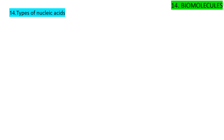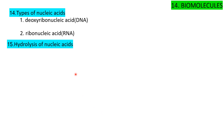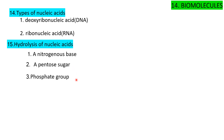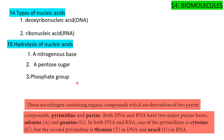Types of nucleic acids: two types — deoxyribonucleic acid (DNA) and ribonucleic acid (RNA). Hydrolysis of a nucleic acid gives three products: 1. nitrogenous bases, 2. pentose sugar, 3. phosphate group. The nitrogenous bases are nitrogen-containing organic compounds derived from two parent structures: pyrimidine and purine. Both DNA and RNA have two major purine bases: adenine and guanine.